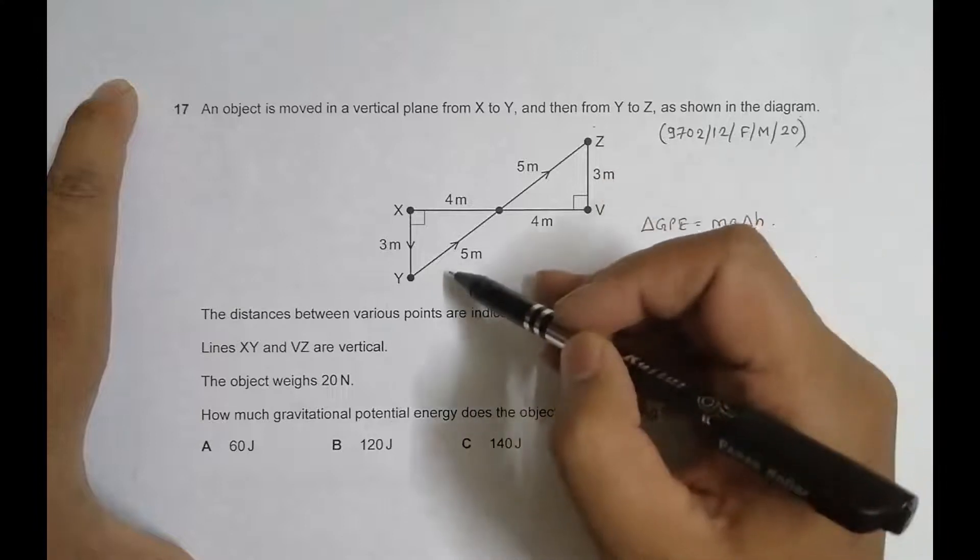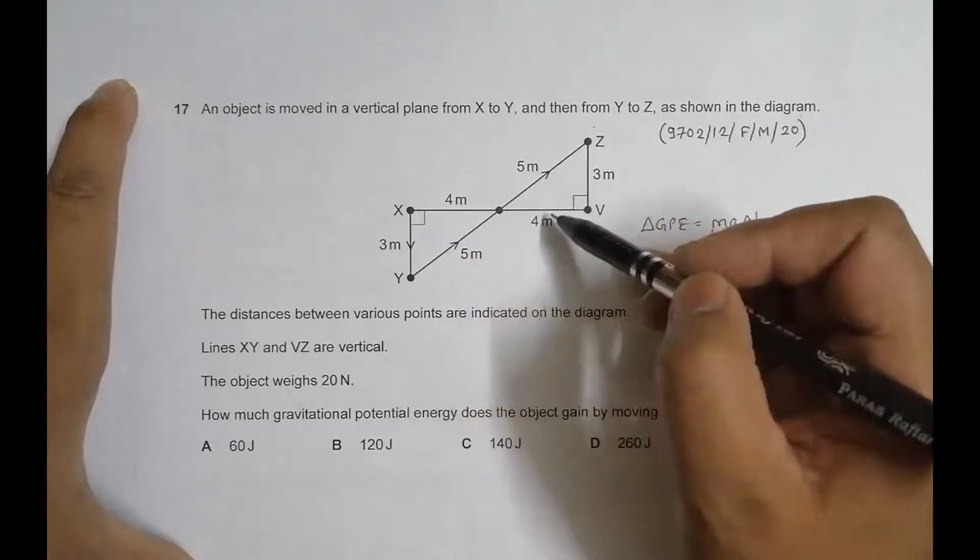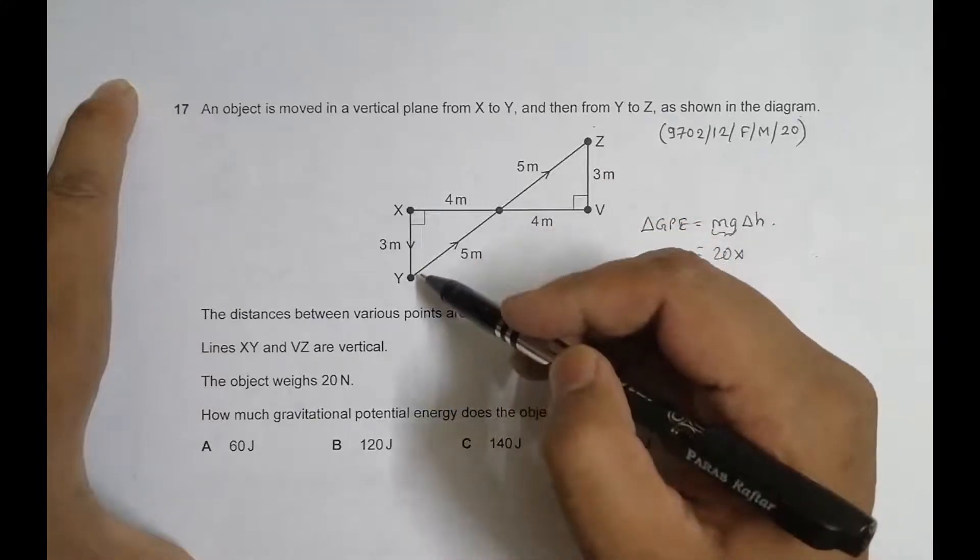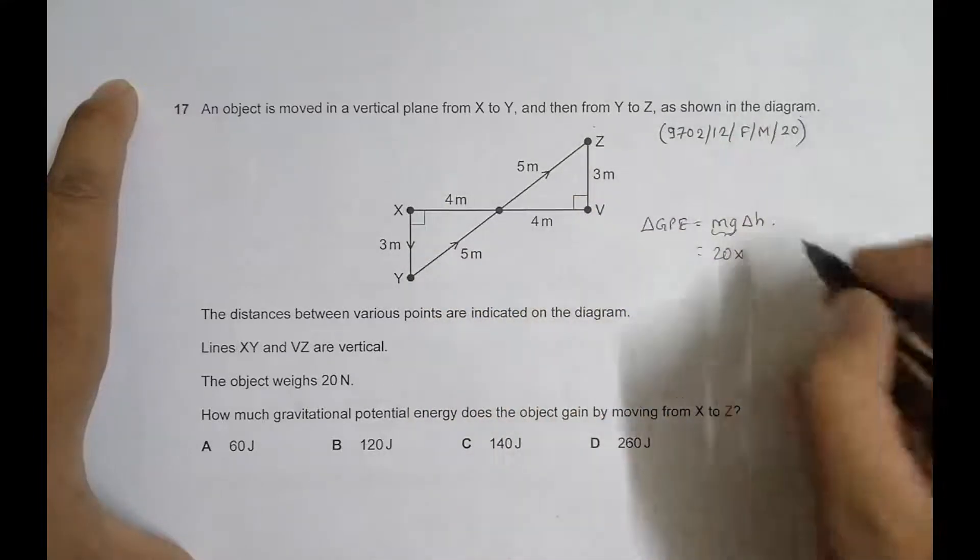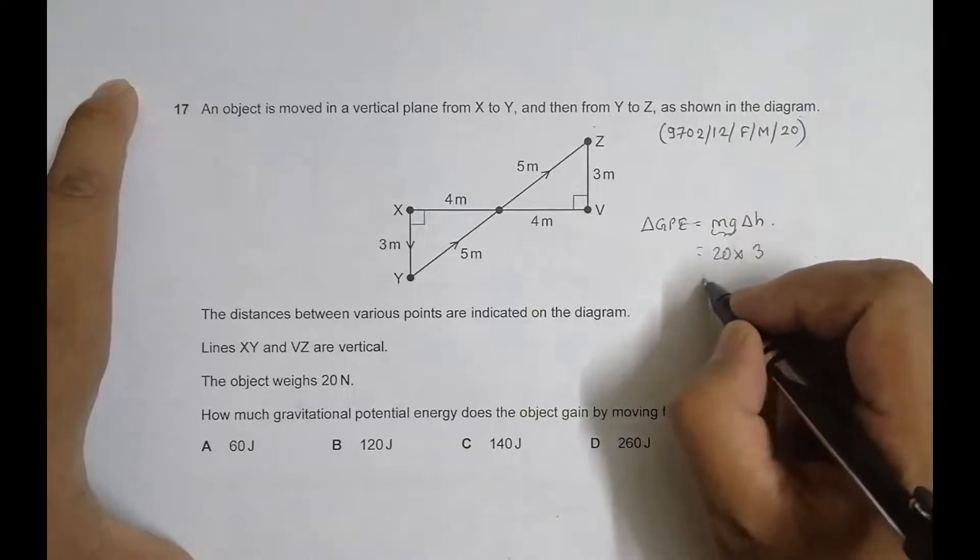X to Z is 3 meters only, 3 meters. This 5, this 5, this 4, 4 does not count. Even this 3 does not count. Initial is X, final is Z, and the difference in height is 3 meters. So equal to 3.